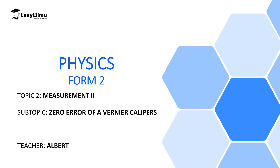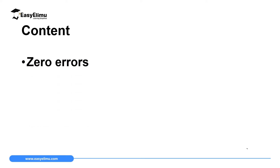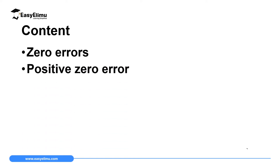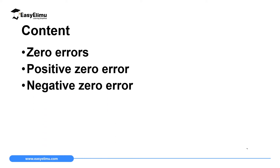My name is Albert. I hope you will enjoy the lesson. By the end of this lesson I expect you to be able to define zero errors in relation to Vernier Calipers, explain what a positive zero error is, and finally describe what a negative zero error is in relation to Vernier Calipers.